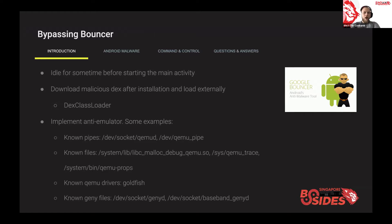Here are some bypass examples. You can idle your main activity for five minutes so Bouncer cannot detect your activities. You can also download your malicious functions in DEX format after installation and use the DexClassLoader function to load those functions into your APK afterwards — the novel technique that Anubis used back then. You can also implement various anti-emulator techniques. You can detect that your APK runs on an emulated system and decide not to run your activities in the simulated device, easily bypassing Bouncer via this technique as well.